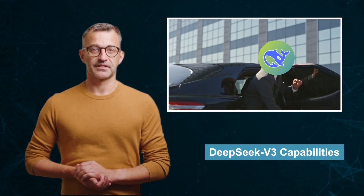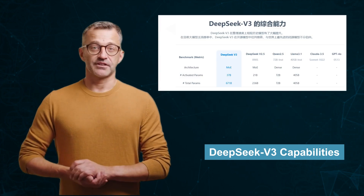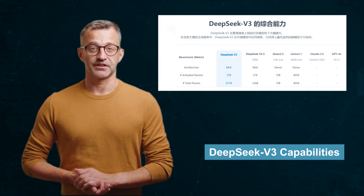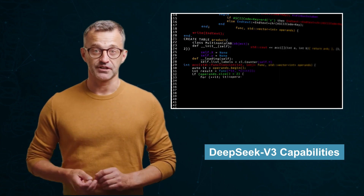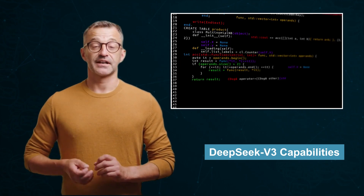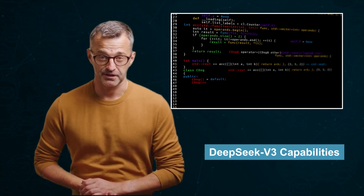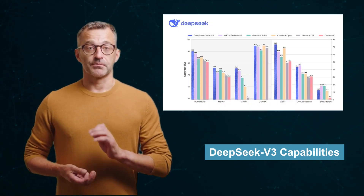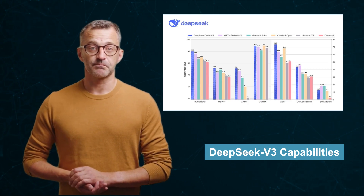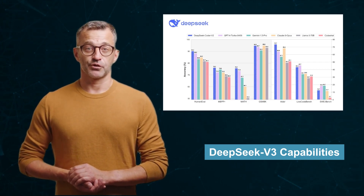Now let's talk about the star of the show, DeepSeek V3. This AI model is turning heads for several reasons: super fast processing speed with faster response times compared to GPT-4, Claude, and Llama; advanced reasoning and coding, making it a favorite among developers; and competitive benchmark performance, outperforming in areas like MMLU and HumanEval. But numbers alone don't tell the full story.